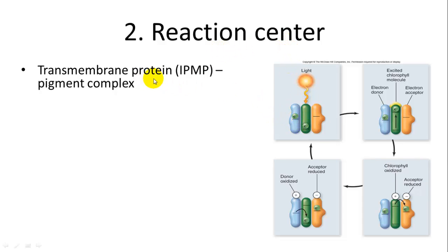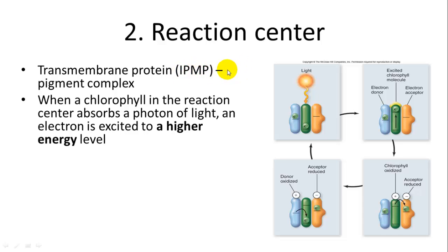Within each reaction center there is a transmembrane protein-pigment complex — an integral membrane protein. When a chlorophyll in the reaction center absorbs a photon, it is excited to a higher energy level. What makes photosynthesis possible is the presence of electron donors and electron acceptors which move electrons, and as they move down energy levels, that energy can be captured.